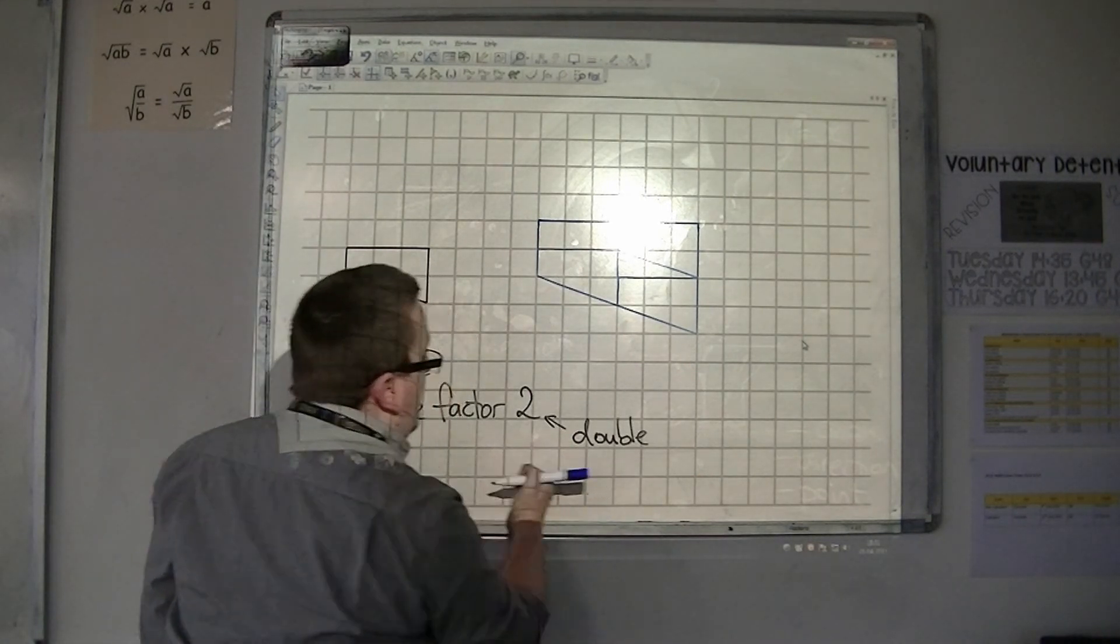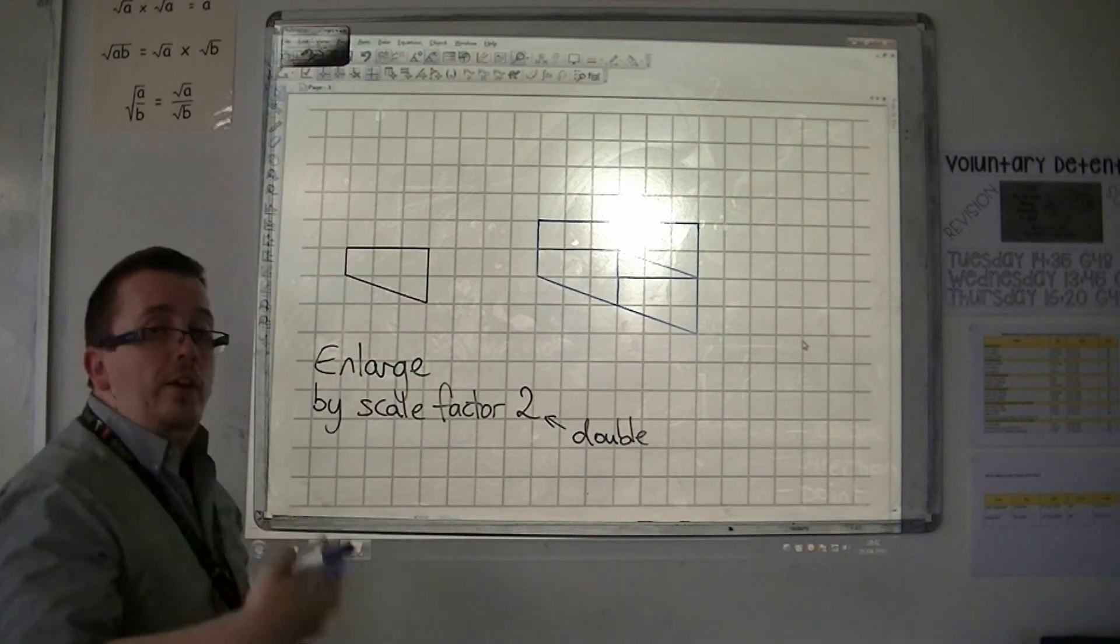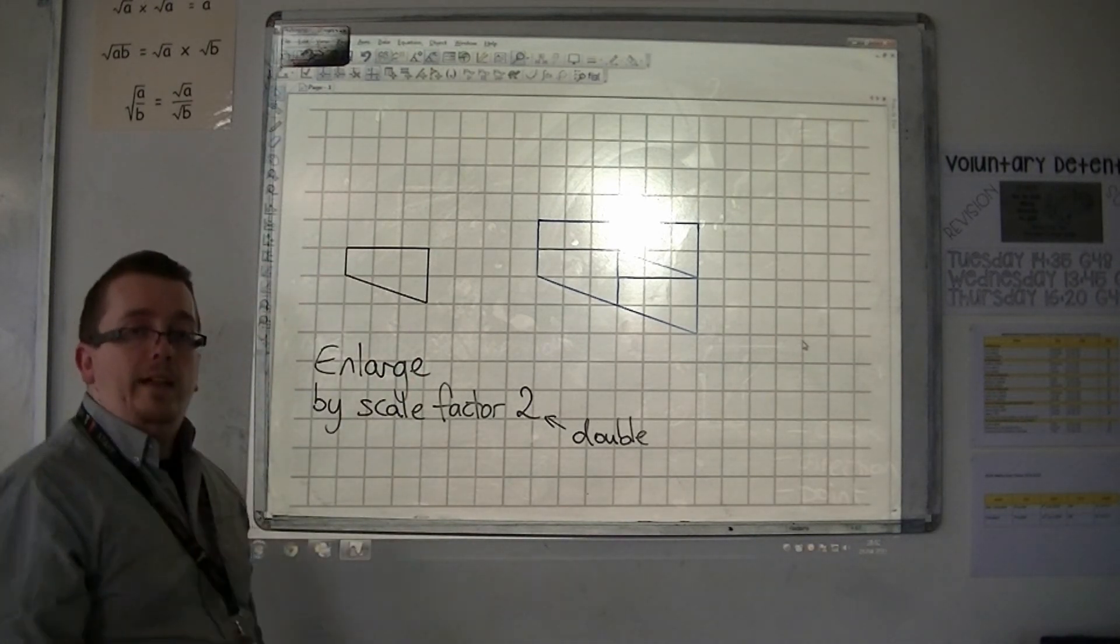So, the key point here is that when you are enlarging by scale factor 2, you double all of the lengths.